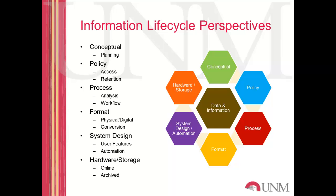Another type of life cycle deals with the format that information is produced and used in — this can be both physical and digital in nature. For example, a company that publishes technical reports probably uses word processing software like Microsoft Word to create their documents, and then has to reformat them into PDFs or e-book formats for publishing and distribution. How a piece of information is formatted electronically or physically through its lifespan is a format type of life cycle.